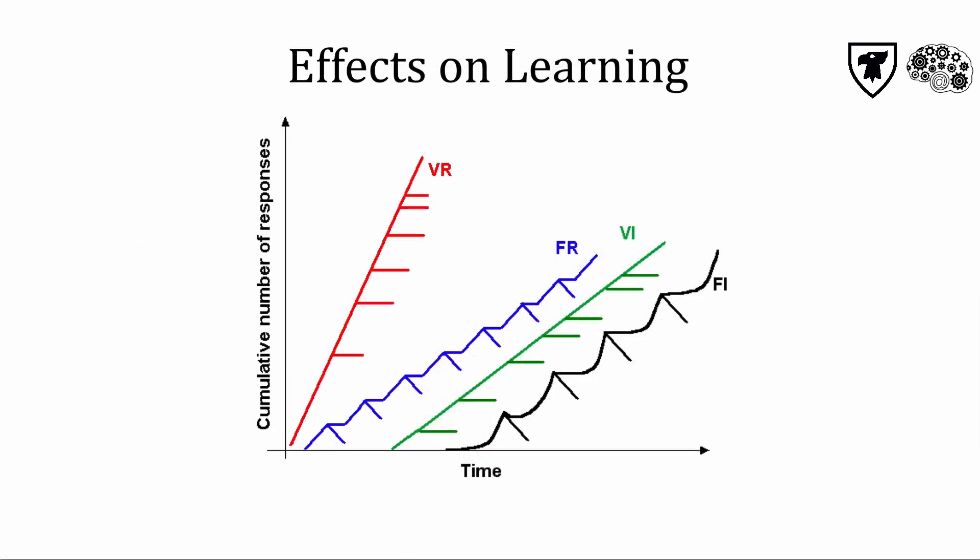The figure above is based upon classic work by Skinner, and shows how schedules influence operant learning. Time is represented on the x-axis along the bottom, and the running total is represented as cumulative number of responses on the y-axis on the left. Each tick mark on the figure here indicates when a reinforcer is obtained.